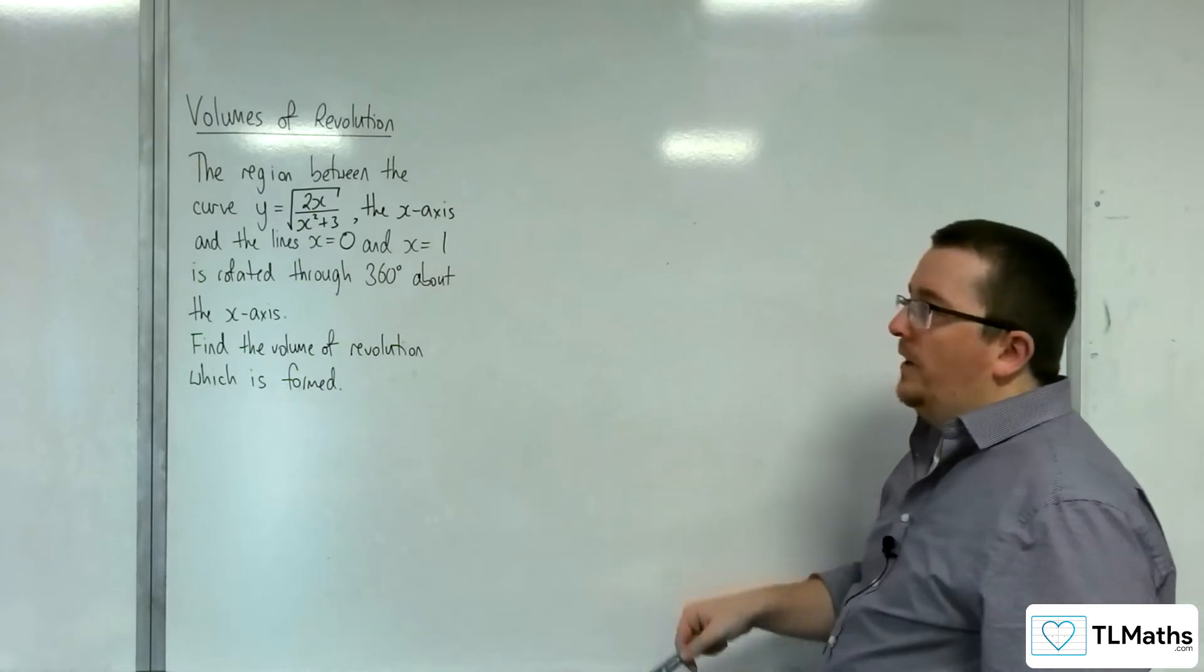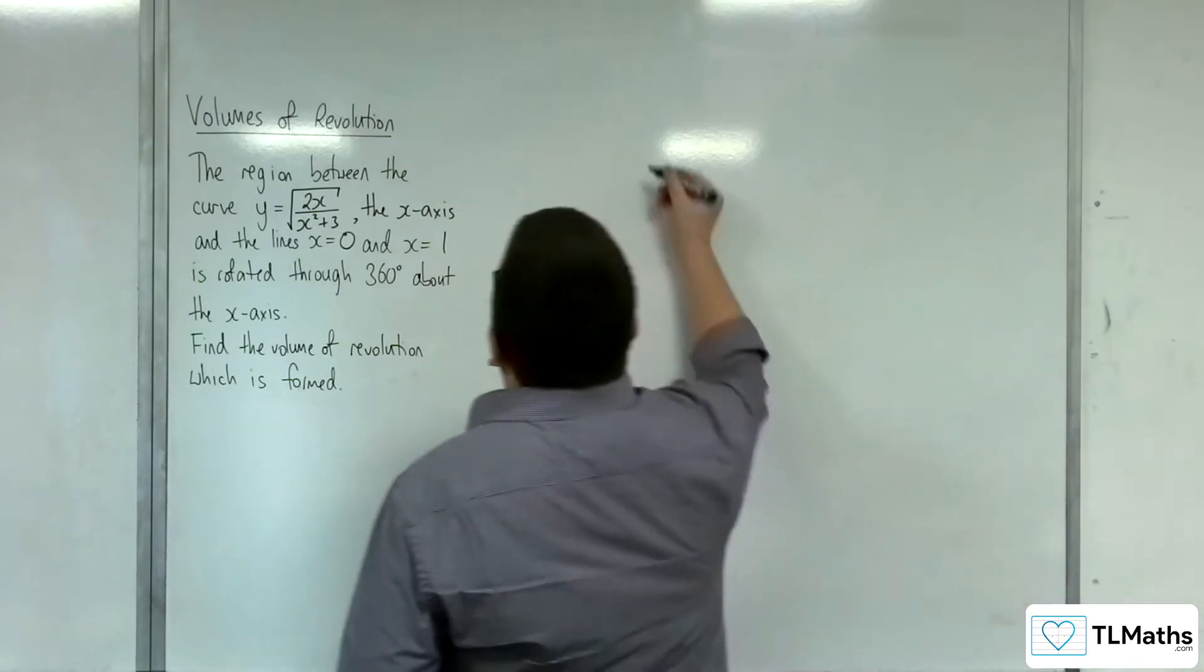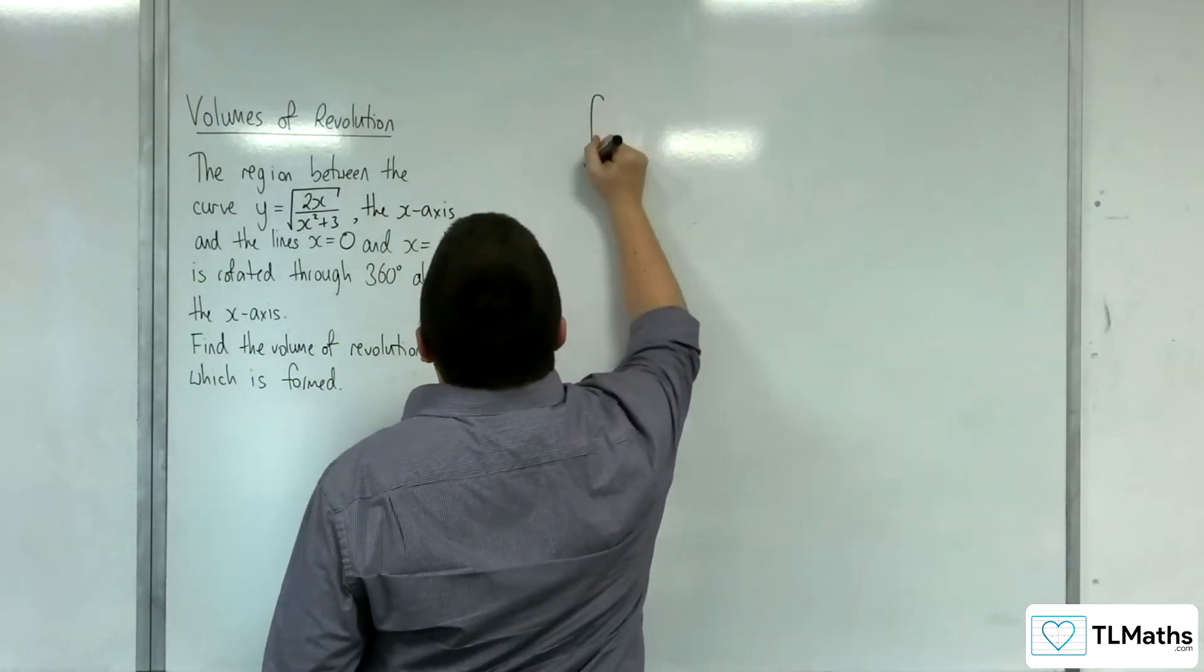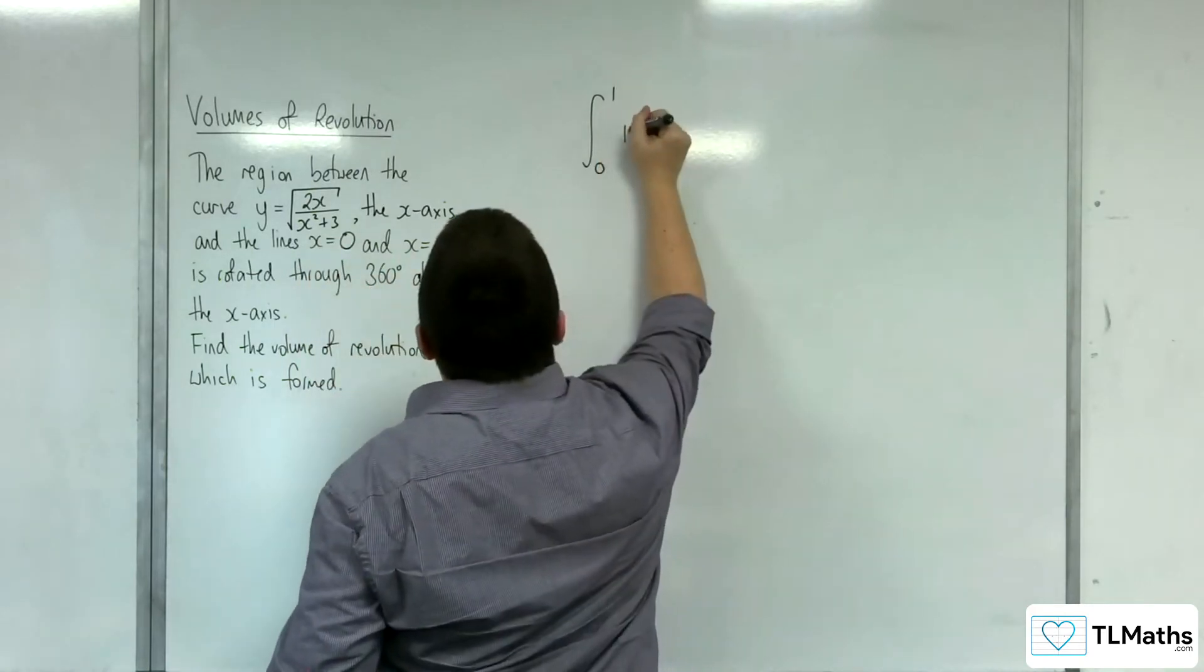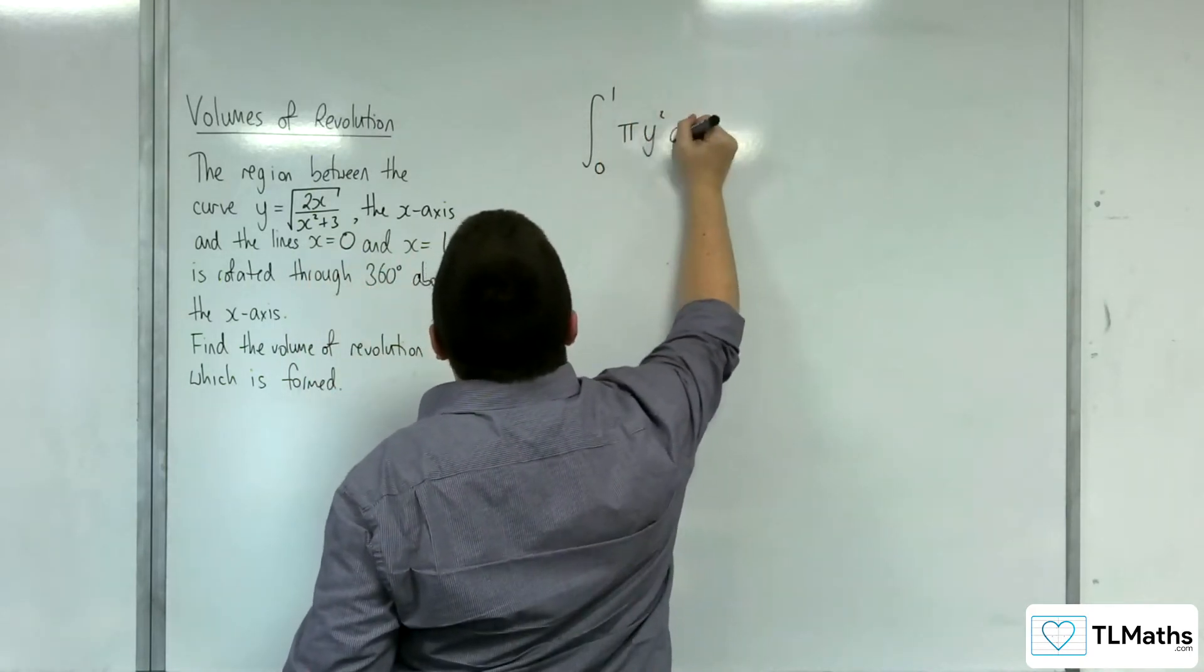Because we're rotating about the x-axis, this is the integral of pi y squared. So the integral between 0 and 1 of pi y squared dx.